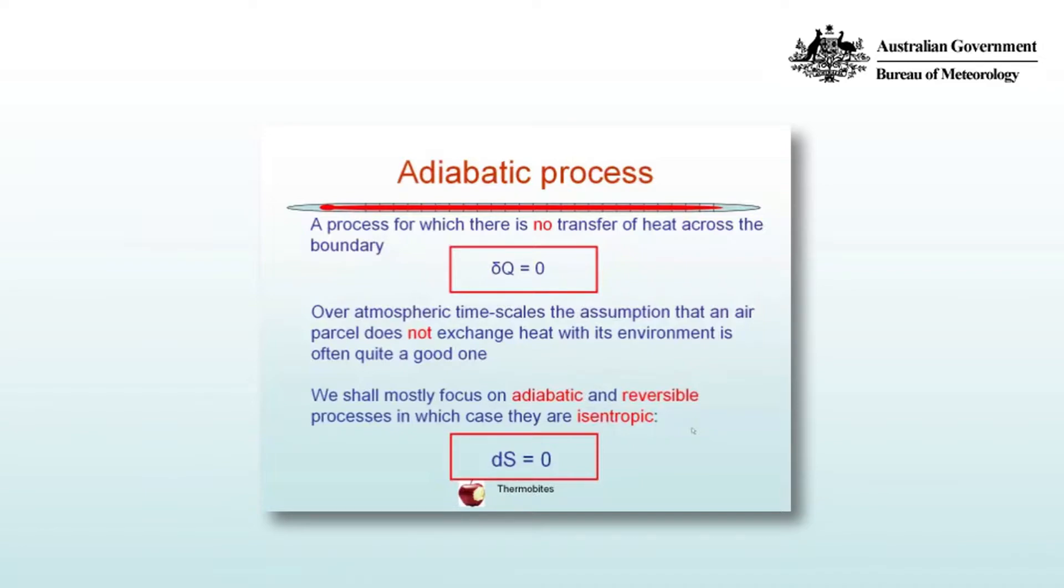Over the sorts of time scales that we think about in the atmosphere, the assumption that a parcel of air does not exchange heat with its environment is quite often a good one, particularly away from the Earth's surface, where there is no conduction of heat from the Earth's surface to the air above it.